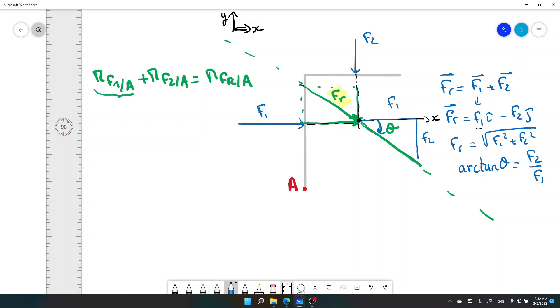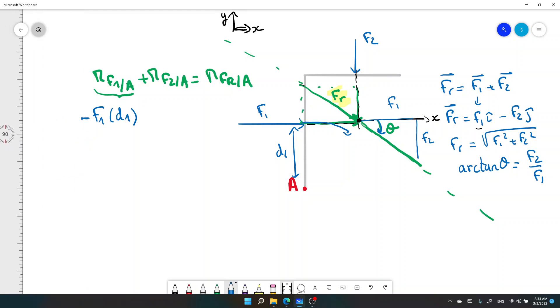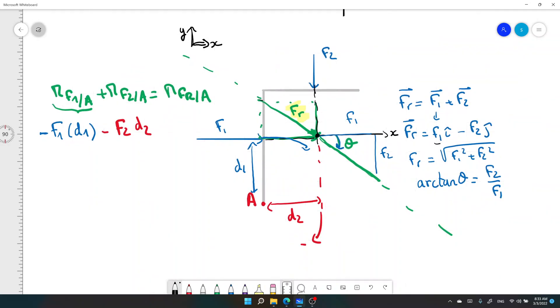How do we find this? For F1, that will be F1 times this distance d1, and this rotation, this force creates a negative rotation, so minus. For F2, that will be F2 times this distance d2, perpendicular. And this creates also a negative rotation. So this one, you can find it, you know F1, d1, F2, and d2.